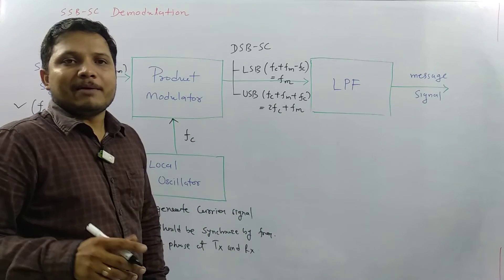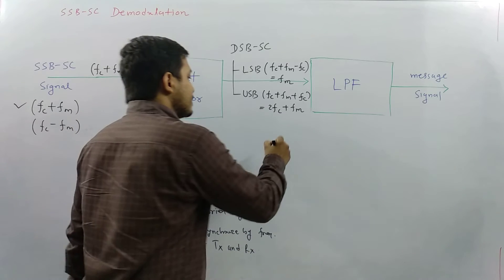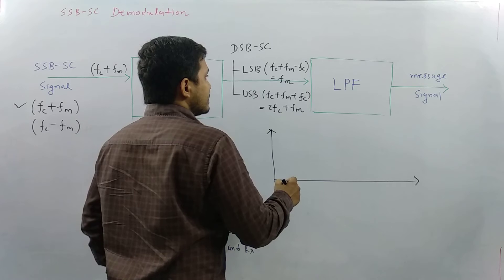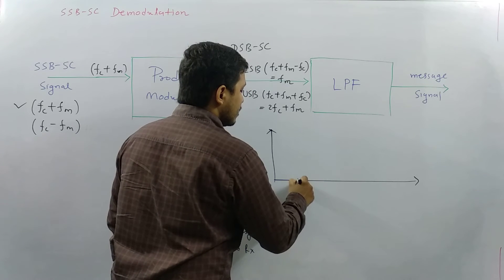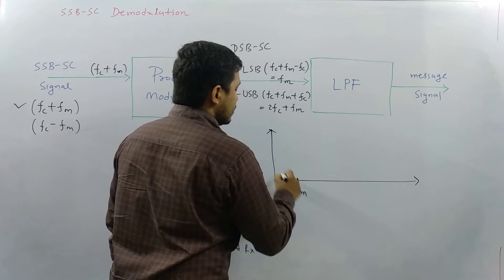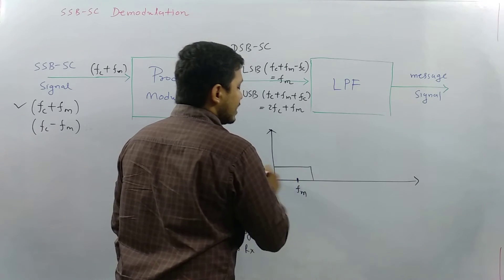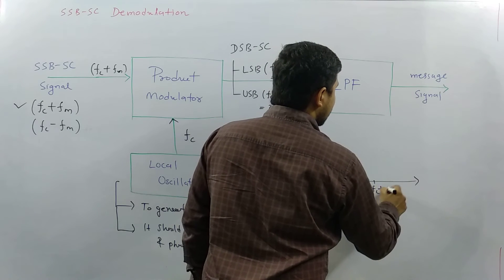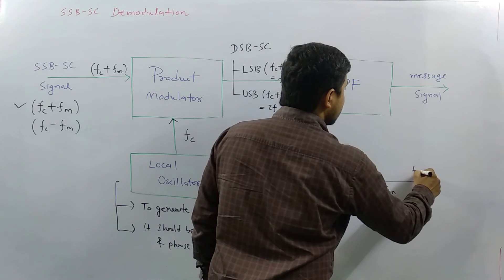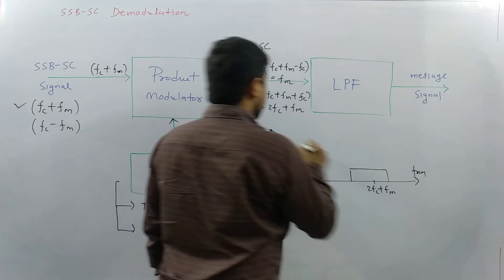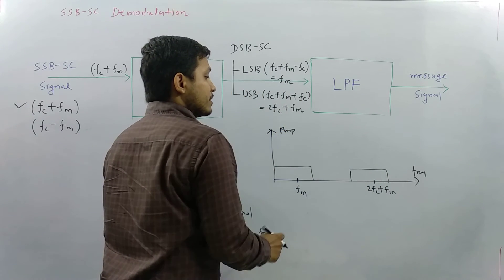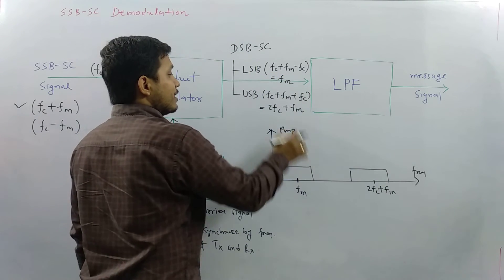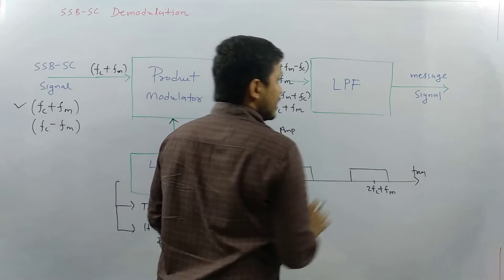So we have two bands. Looking at the frequency response — with amplitude on the vertical axis and frequency on the horizontal axis — one band is at FM and the second band is at 2FC plus FM, which is at a much higher frequency.